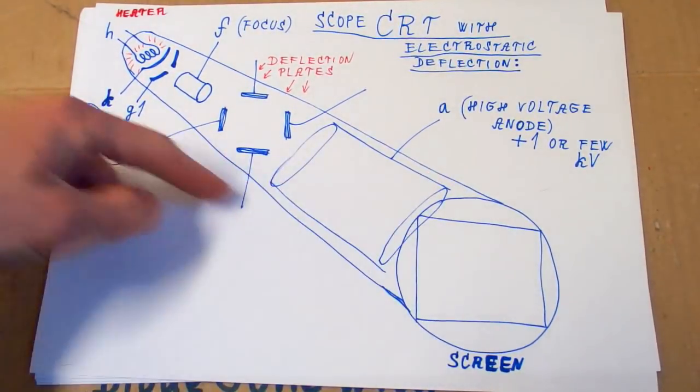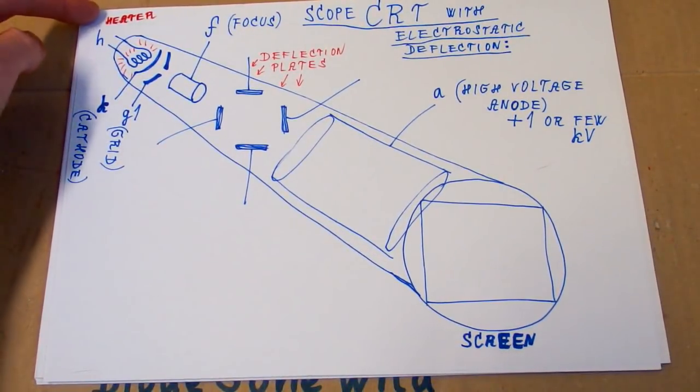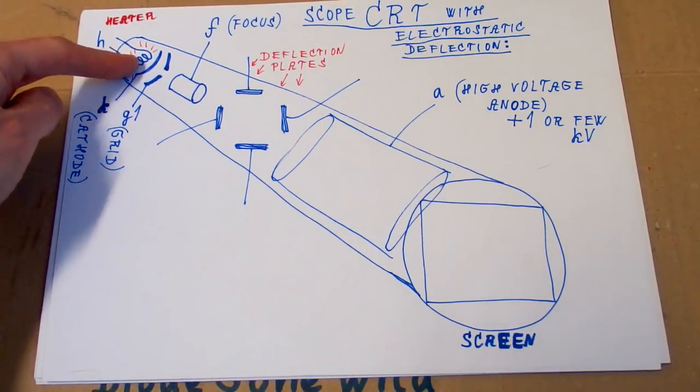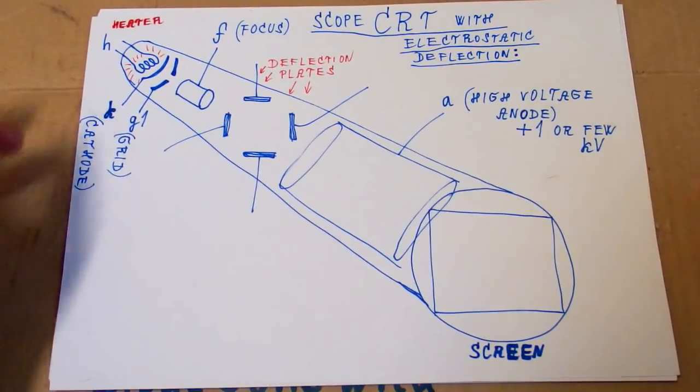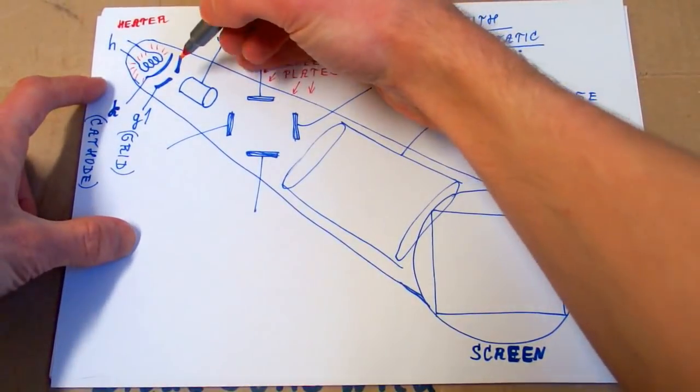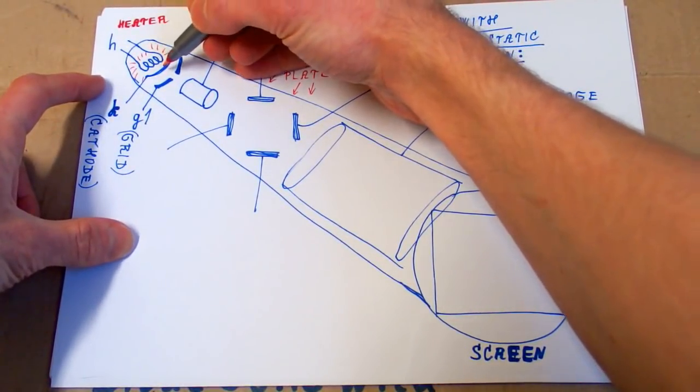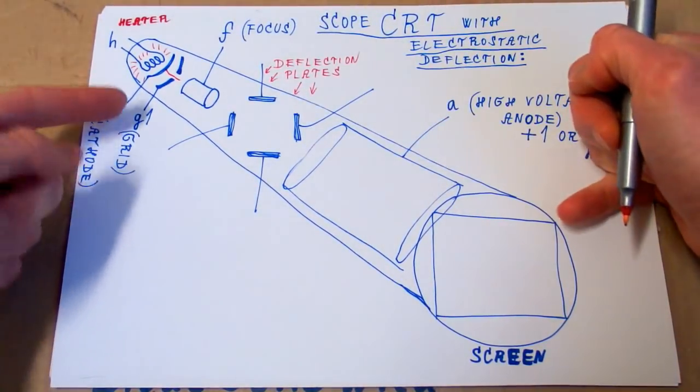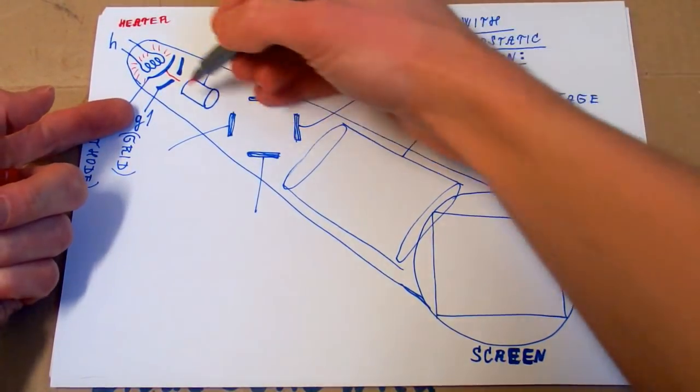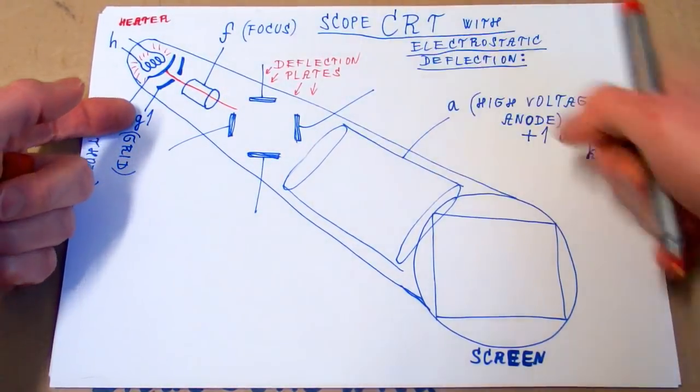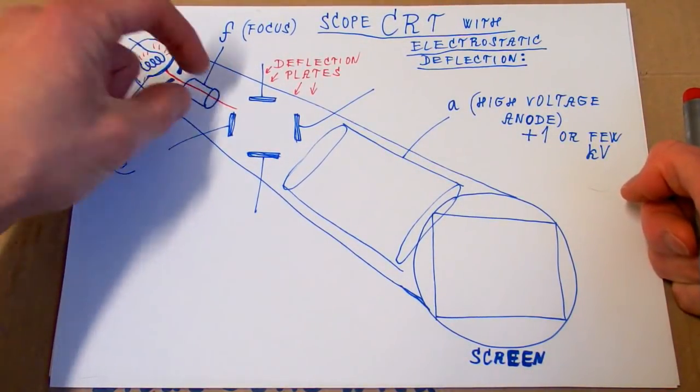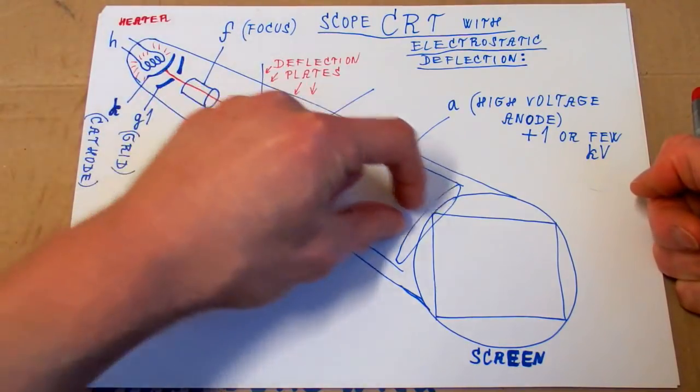And it looks about like this. There is a heater filament heating up the cathode. It's emitting electrons and forming an electron beam. The beam comes from the cathode. It goes through the grid to control the brightness.